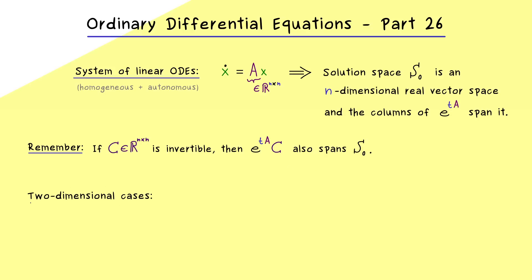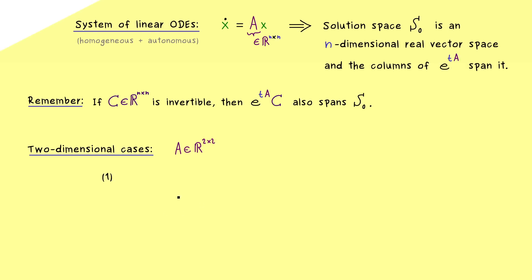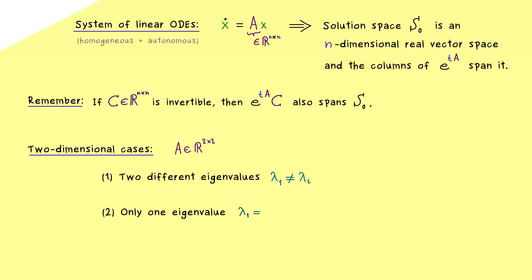From now on we consider a 2x2 matrix A. If you have understood what can happen in this two-dimensional case, you also know what can happen in the n-dimensional case. The characteristic polynomial is a quadratic polynomial with two zeros which could be different or could coincide, giving us two cases: either two different eigenvalues or only one. These two cases result in different matrix exponentials, and we can subclassify them further.